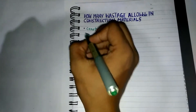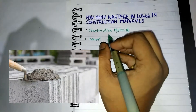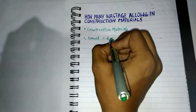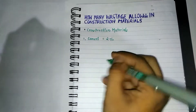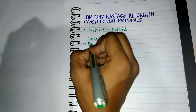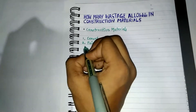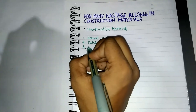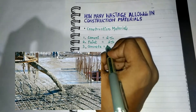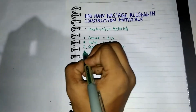Number one: Cement — two percent allowable wastage. Number two: Paint — two percent. Number three: Concrete — two to three percent allowable wastage.